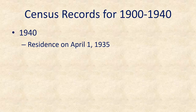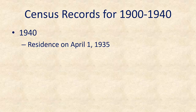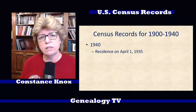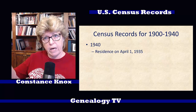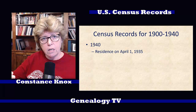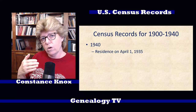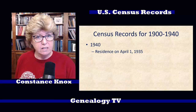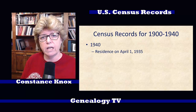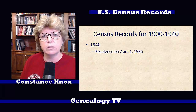The 1940 census actually shows another column that I absolutely love. It says: what is your residence on April 1st, 1935? So here we are in 1940, and it's asking you where you lived five years previous. There was no census in 1935 — we had 1930 and then 1940 — but they're asking where you were in 1935. So in a way, it's kind of like a mini census as to where you were in 1935. That kind of gives us another little five-year glimpse backwards in time.